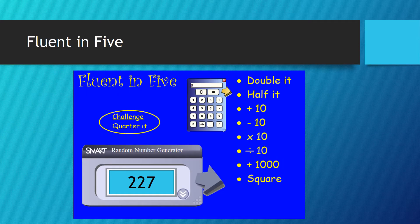First step as always is our Fluent in Five. Today's number is 227, so what we need to do is pause the video and have a go at these questions.